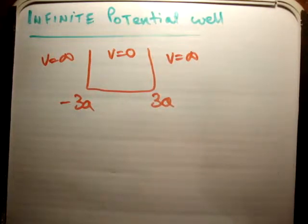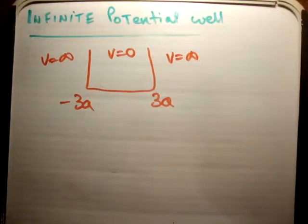In this video I'm going to solve the time-independent Schrödinger equation for a particle in an infinite potential well. This is the fourth in this series of videos. My first video centered the well at zero, going from negative to positive a, and I did that in great depth.